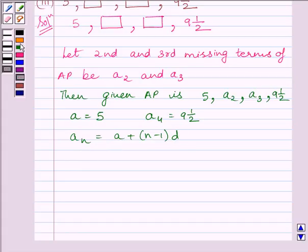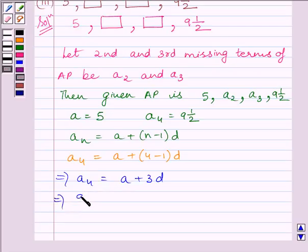We know a₄ equals a + (4-1)d, which implies a₄ = a + 3d. Since a = 5 and a₄ = 9½, substituting these values gives us 9½ = 5 + 3d.